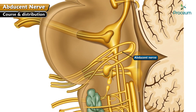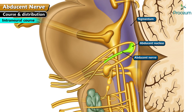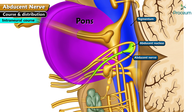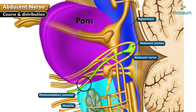Course and distribution — intraneural course. The axons of the abducens nucleus travel anteriorly through the tegmentum in the basilar part of the pons, close to the midline, and emerge from the pontomedullary junction above the pyramid.